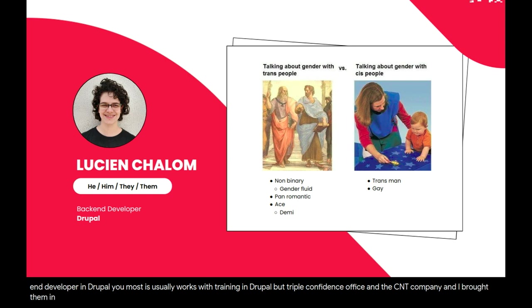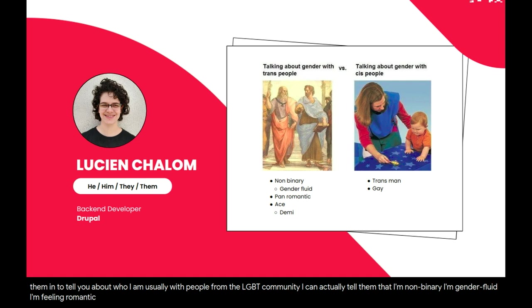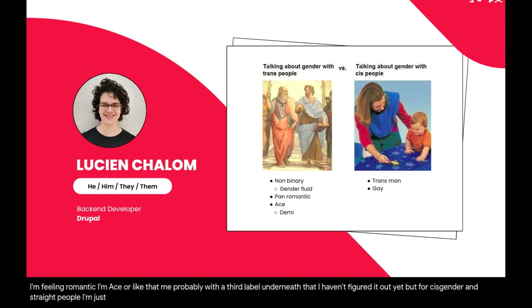I brought a meme to tell you about who I am. Usually with people from the LGBTQ community I can tell them that I'm non-binary, I'm gender-fluid, I'm panromantic, I'm ace — more like demi — probably with a third label underneath that I haven't figured out yet. But for cisgender and straight people I'm just like: I'm trans, I'm a man, and I'm gay. Let's keep it simple.